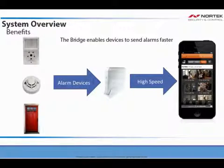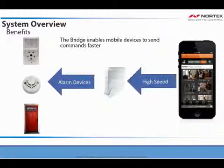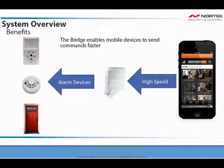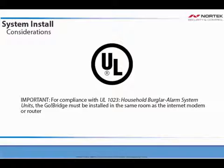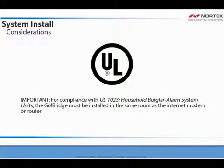The GoBridge directly connects to the customer's network using an Ethernet cable. The bridge enables devices to send alarms faster, and it also enables mobile devices to send commands faster. For compliance with UL1023, the GoBridge must be installed in the same room as the Internet modem or router.